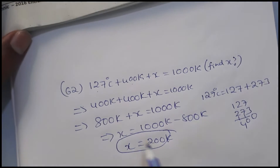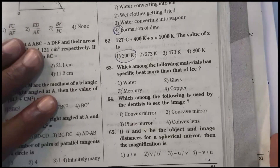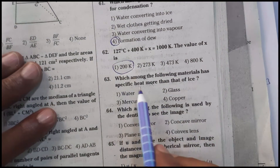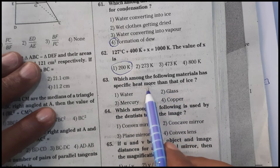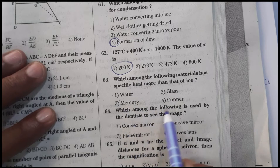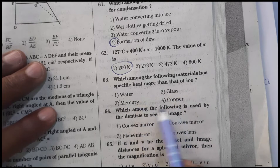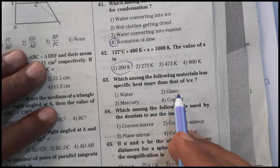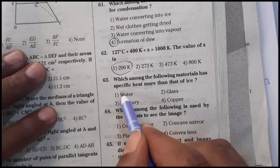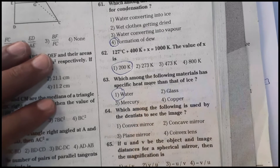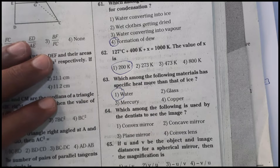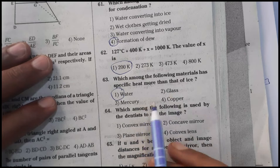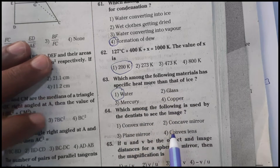Question 63: Which among the following materials has a specific heat higher than ice? Glass, mercury, and copper all have lower specific heat. Water has a higher specific heat of 1 calorie per gram degree Celsius, whereas ice is 0.5 calorie per gram degree Celsius. All remaining options have lower specific heat than ice.